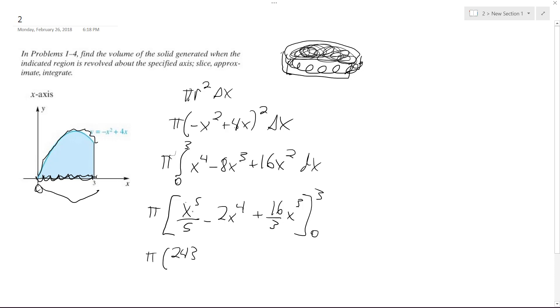Because that's 3⁵/5 minus 3⁴ times 2 plus 16 times 27... Then we end up with 153π/5, that's what it simplifies down to, and it's approximately equal to 96.1.